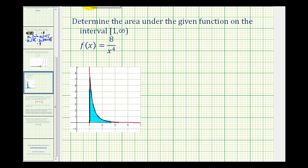Well because this function is non-negative on this interval, we should be able to set this up as a definite integral. So the area would be equal to the definite integral from one to infinity of eight divided by x to the fourth with respect to x. Now this is an improper integral,